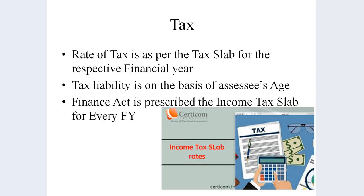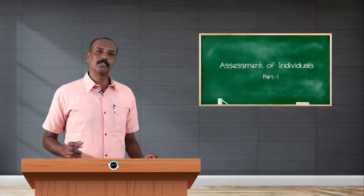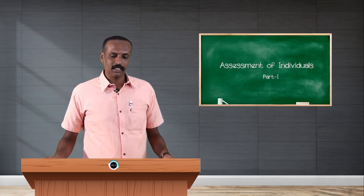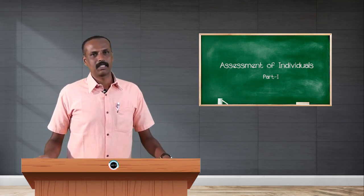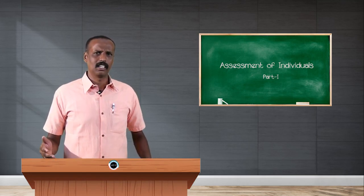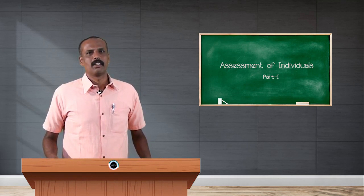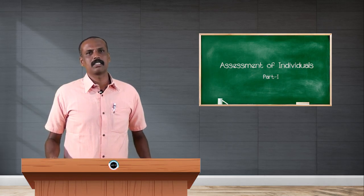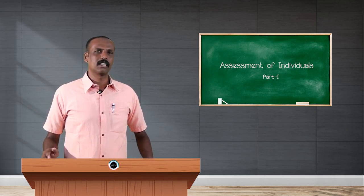We have already discussed about various heads of income applicable to different kinds of assessees. Out of individual assessee, company assessee, cooperative society, firm, and so on — today we have to discuss only about individual assessees. An individual, as per the Income Tax Act 1961, is a kind of person having living existence, and this individual assessee is also liable to pay tax on their income.